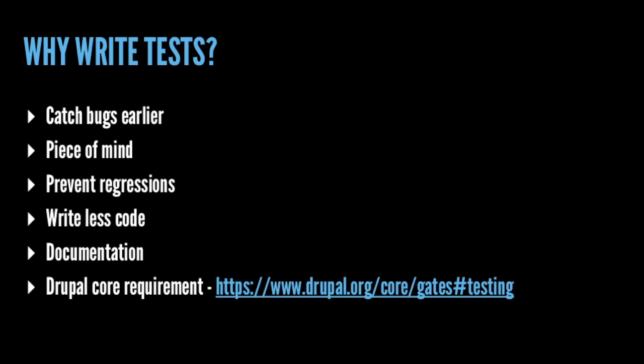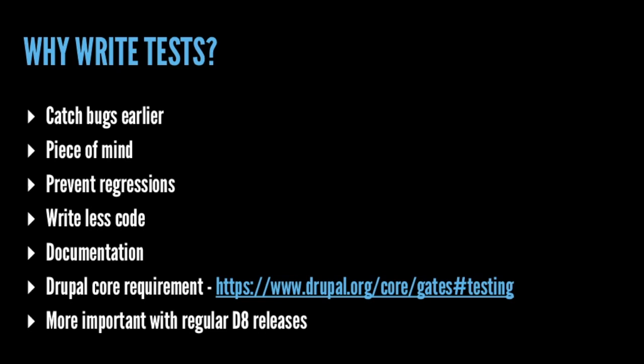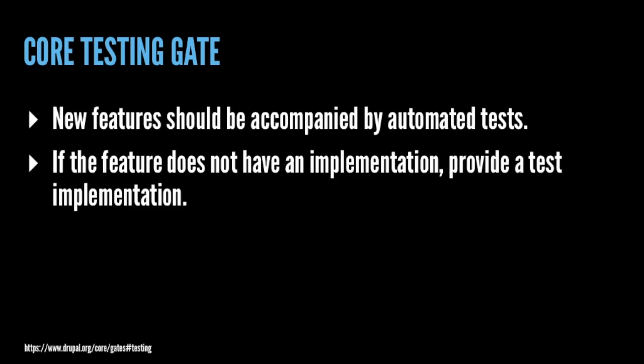Testing is also a Drupal core requirement. If you want to contribute to core, everything has to have tests now. And it's more important with Drupal 8 releases. Those of us aware of semantic versioning — and Gabo talked this morning about minor releases every six months — while that's really great for adding new features, it means things could potentially break on your site. In Drupal 7 a module could work forever with no API changes, but in Drupal 8 it could only last up to six months. Having tests lets you run them before upgrading to the next minor version for peace of mind.